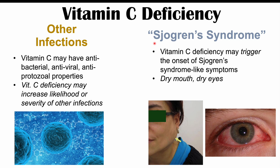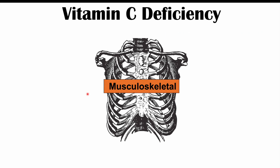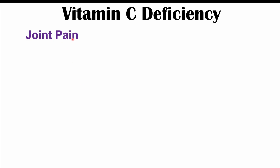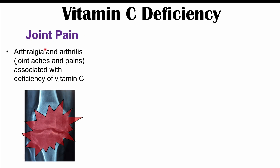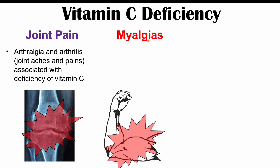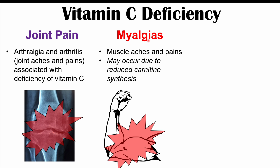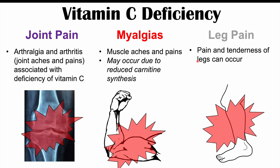The next category is musculoskeletal, involving the muscles and bones. We can see joint pain in some cases of vitamin C deficiency — arthralgia and arthritis. Arthralgia is joint pain, and arthritis is joint inflammation, so patients may have joint aches and pains. We can also see myalgias — muscle aches and pains — which may occur due to reduced carnitine synthesis, as vitamin C is important in carnitine biosynthesis. Leg pain and tenderness occurring over the legs can also occur.